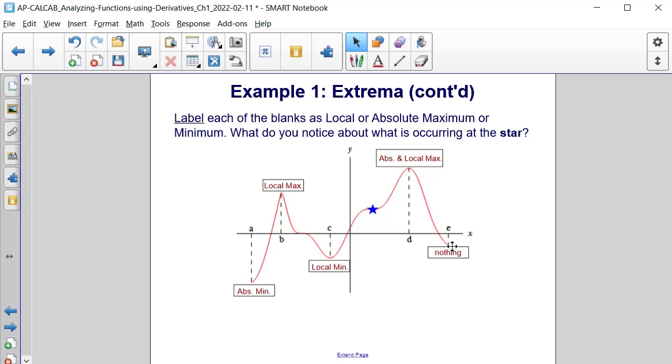And since point e is not the absolute minimum, we cannot label it as anything. And point d has both an absolute and local maximum value.